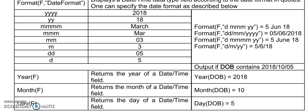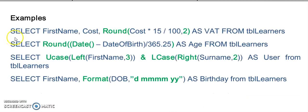Here are some examples of applying these functions. Here I'm displaying the name and the cost. I'm rounding the VAT that I've calculated here off to two decimal places. Here I'm doing a calculation to calculate someone's birth.